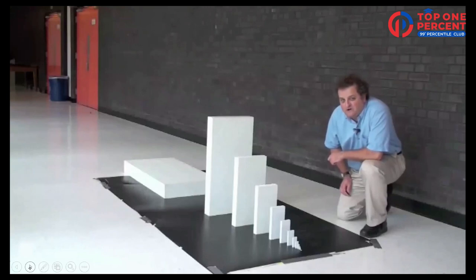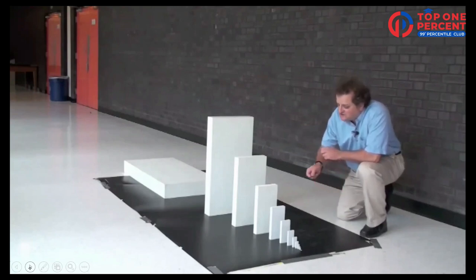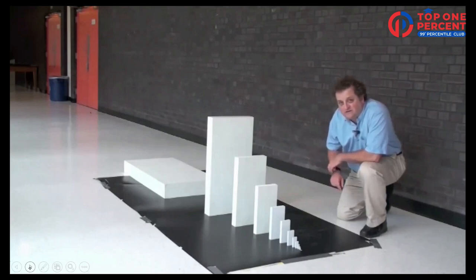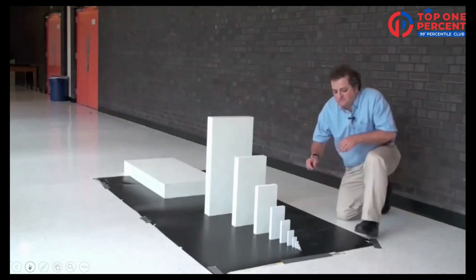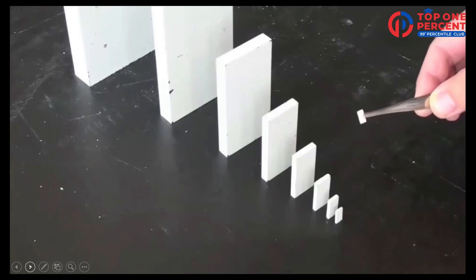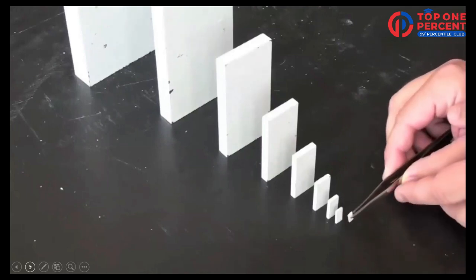Everybody knows about playing with dominoes, but what you may not know is that a domino can knock over another domino which is about one and a half times larger. So what I have here is a chain of dominoes, each one is one and a half times larger than the previous one. And the smallest domino is about five millimeters high and one millimeter thick, and I will carefully place it.